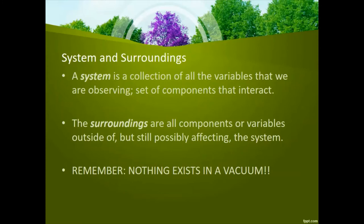Nothing exists in a vacuum. When we start looking at this relationship of system and surroundings, we usually talk about it in terms of making a diagram. When we start thinking about a system — if I create a circle here — this represents the system and all the things that go on inside it. Outside of that is the surroundings. We usually talk about energy flow within a closed system, but oftentimes we get energy from the surroundings or give energy to the surroundings.